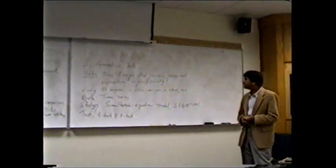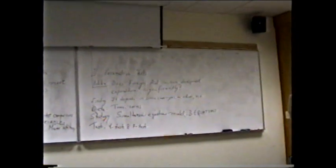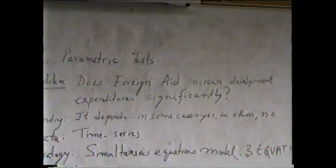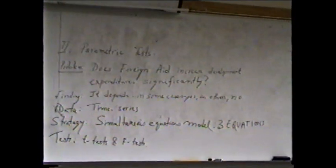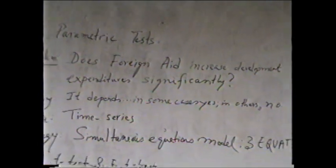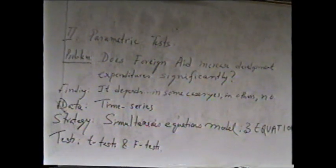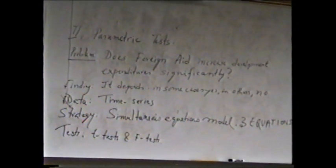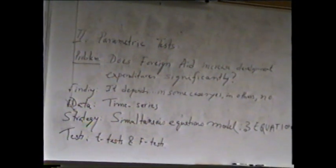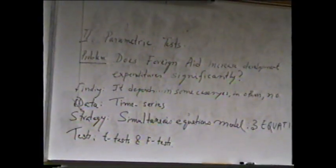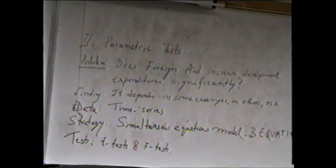So this scientific method can actually help us settle some very important policy issues. The second example is about parametric tests, and the problem here is: does foreign aid increase development expenditures significantly? In most cases foreign aid does increase development expenditures to some extent — the question is whether that extent is statistically significant. The finding is that it depends: in some cases yes, in others no. For this we needed time series data for a number of countries. I worked with co-authors on India and a number of countries together.